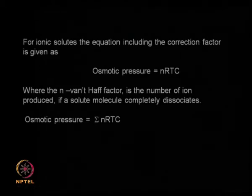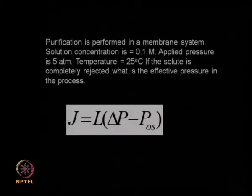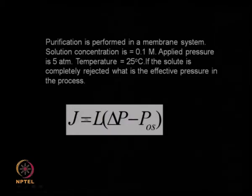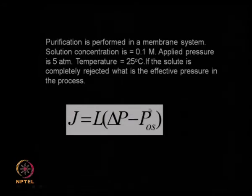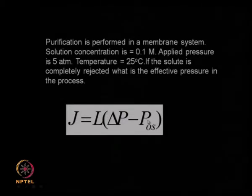This summation term leads to a decrease in your driving pressure. Going back to the earlier problem where the solute is completely rejected (S = 1): J = L·(ΔP − P_os), where P_os = RTC = R × 298 × 0.1. You know ΔP is 5 atmospheres, but because of the negative P_os term, the total driving force gets decreased. This is how you calculate the rate of membrane purification.